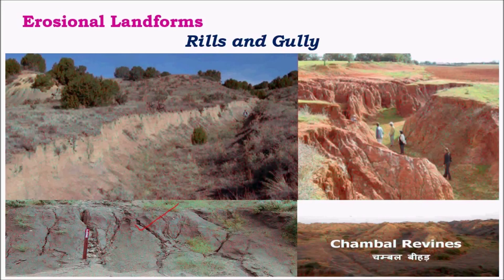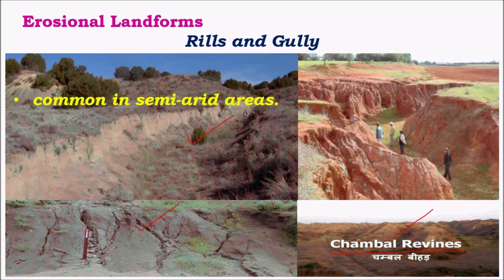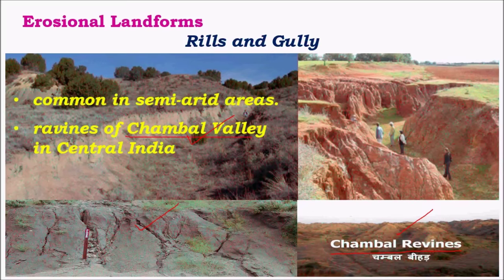Other important landforms are rills, gullies, and ravines. Rills are small streams formed due to erosion of water during intense rainfall. Over many years, rills form gullies — broadened and larger rills — and gullies give rise to ravines. A good example is the Chambal ravines in central India. As the Chambal River flows through a semi-arid region, it gives rise to these ravine and gully landforms, most common in semi-arid areas.